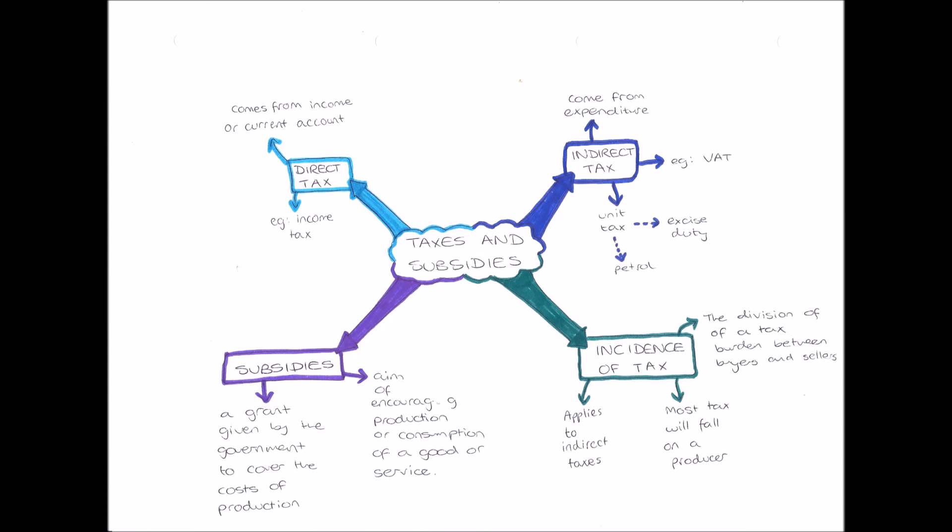Now most tax will fall on a producer if the good is price elastic. This is because if there were an increase in tax by, say, 5%, the company may not want to increase their price by a whole 5%, because as the good is price elastic, they're going to lose a huge amount of demand. So the company may decide to absorb the tax and pay a lot of it itself out of profit it's already made in the past. Therefore, if the good that the company is selling is price elastic, then the incidence of tax will fall on the company, on the producer.